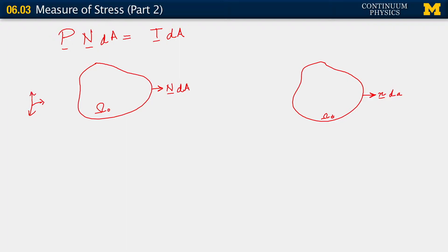The question that was asked was: it's clear enough to understand why, in the case of P, this area vector is on the reference configuration, whereas in this case it is on the current configuration. Now when we look at the force applied here — let's suppose that this is t·da — it's clear enough to understand that it's on the spatial configuration. But when we say it's the same force acting on the reference configuration, isn't that force also then in the reference configuration?